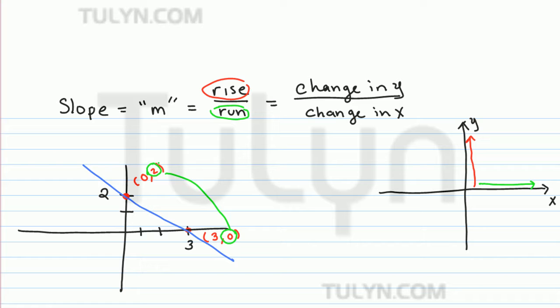So the change in Y in this case can be thought of as the difference between 0 and 2. And similarly, the change in X, well X goes from 3 all the way to 0, so the change in X can be thought of as 3 minus 0, the difference between the two coordinates.